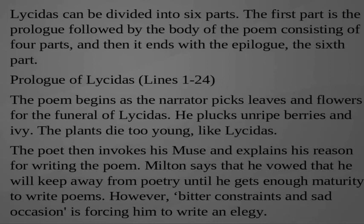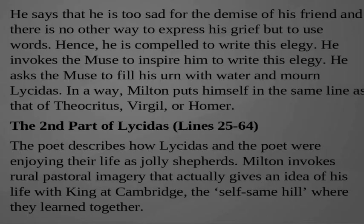Prologue of Lycidas, lines 1–24. The poem begins as the narrator picks leaves and flowers for the funeral of Lycidas. He plucks unripe berries and ivy — the plant died too young, like Lycidas. The poet invokes his muse and explains his reason for writing the poem. Milton says he planned to stay away from poetry until he gained enough maturity, but bitter constraints and sad occasion are forcing him to write an elegy. He invokes the muse to fill his urn with water and mourn Lycidas, placing himself in the tradition of Theocritus, Virgil, or Homer.